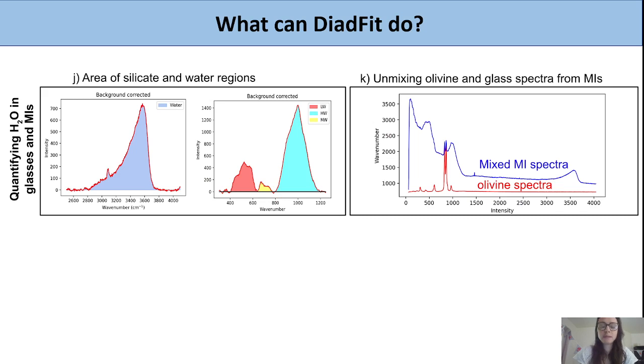There has been increased interest in using Raman spectroscopy to quantify water content in silicate glasses. For a spectra collected, you can quantify the area of the silicate region and the area of the water region and take the ratios between these.